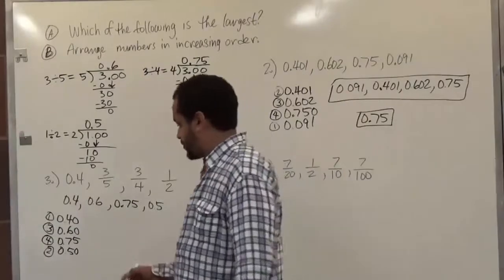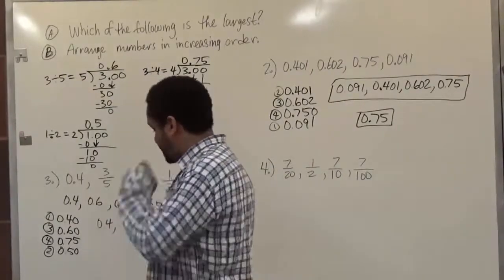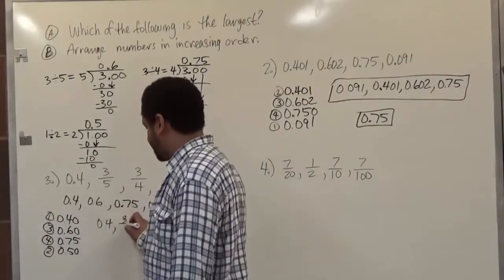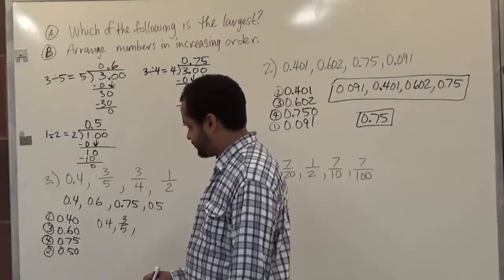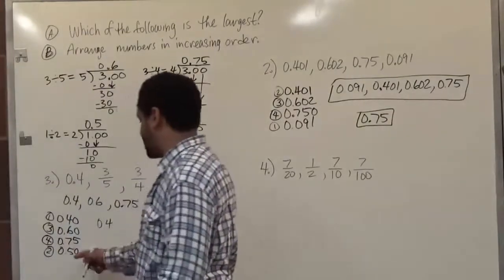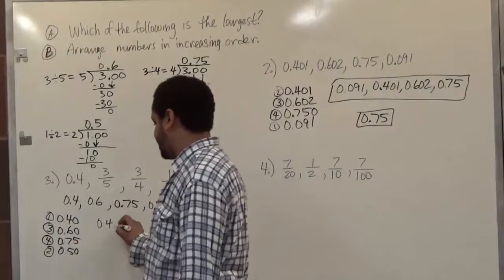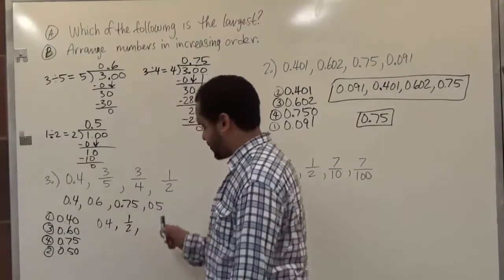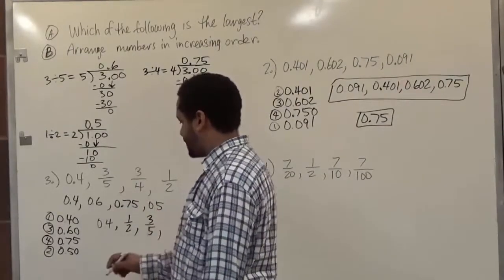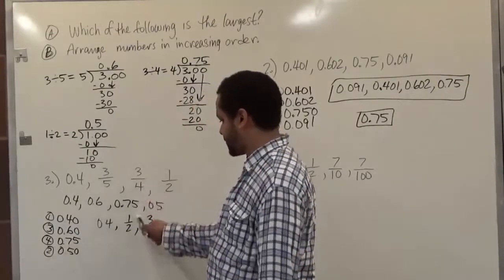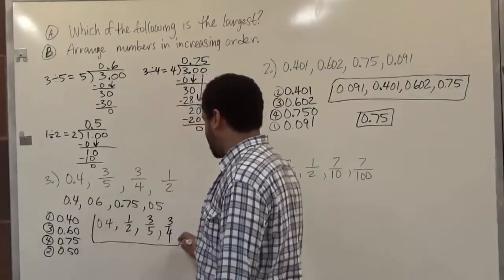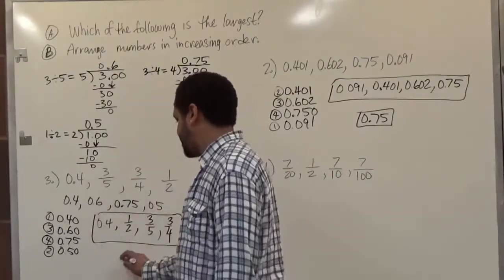The 0.4 was always 0.4, so we start with 0.4. The next term — the 50 cents — was the 1 half. The third term was the 60 cents, which is the 3 fifths. And the final term is the 75 cents, which was the 3 quarters. So here we have the order from smallest to largest, and the highest value on this list is going to be 3 quarters.